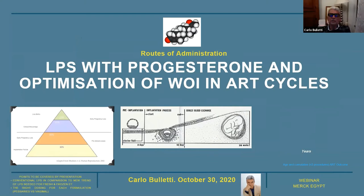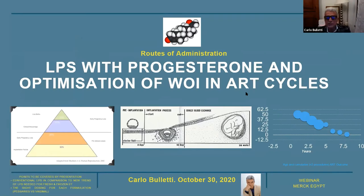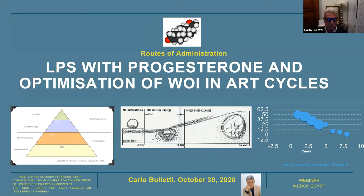My commitment today is to speak about luteal phase support with progesterone and the optimization of the window of implantation in the heart cycle. The process of implantation depends on several factors: modification during differentiation of the embryo and modification during differentiation of the endometrium. That interface depends mostly on the production of progesterone.